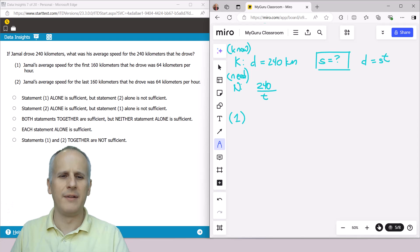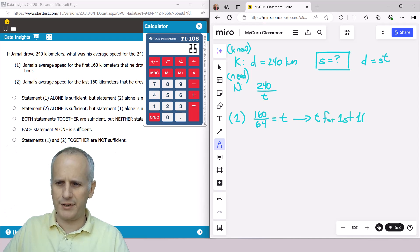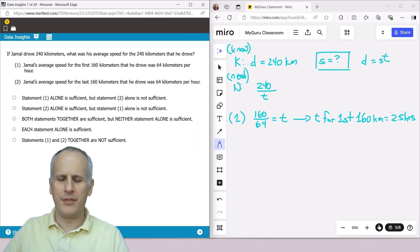So we're going to just write condition one here. And we read: Jamal's average speed for the first 160 kilometers that he drove was 64 kilometers per hour. Well, that means that 160 divided by 64, so the distance divided by the rate, is going to be the time for the first 160 kilometers. And I am going to encourage you to use the tool provided by the exam. I've got a calculator. Remember to use it. We've got 160 divided by 64, and we discover that it's a relatively easy time of 2.5. So the time for the first 160 km is just equal to two and a half hours. But that clearly does not tell me anything about the time for the second part, so that's not sufficient on its own.